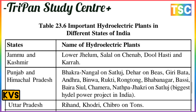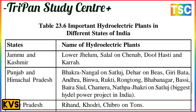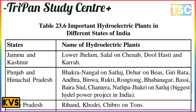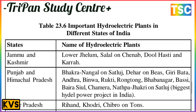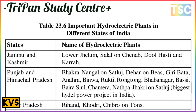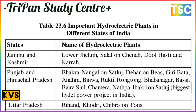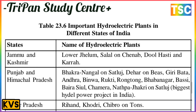The important hydroelectric plants in different states of India include: Jammu and Kashmir - lower Jhelum, Salal, Chenab, Dulhasti, and Bursar. Punjab and Himachal Pradesh - Bhakra Nangal on Satluj, Dehar, Giri, Andhra, Uhl, and Beas. Uttar Pradesh - Rihand, Kohadar, Chhibro, and Tons.